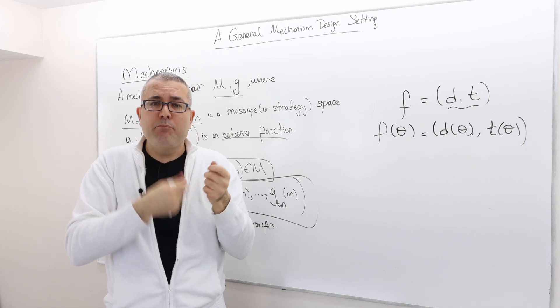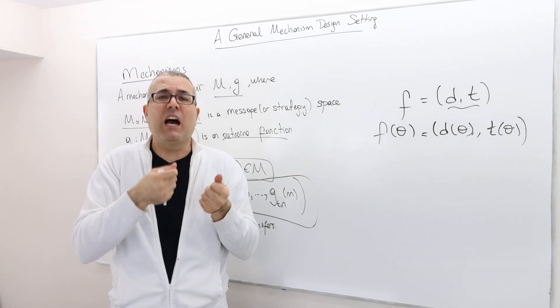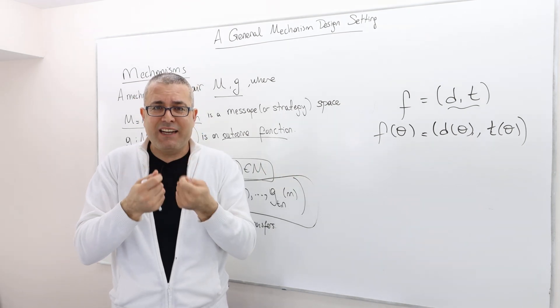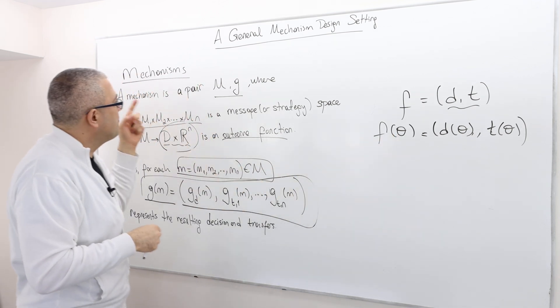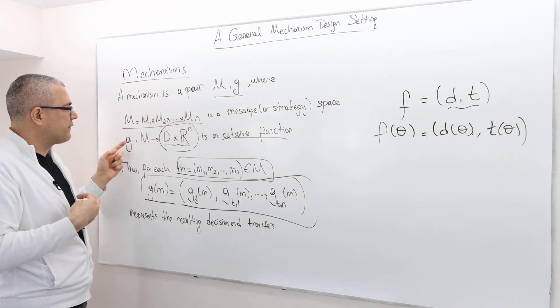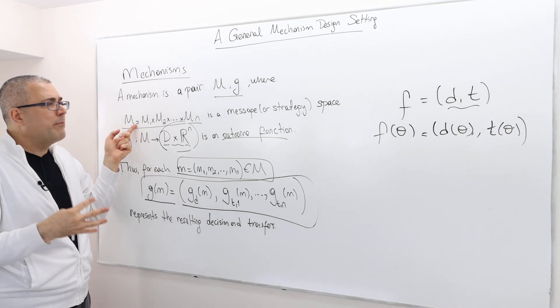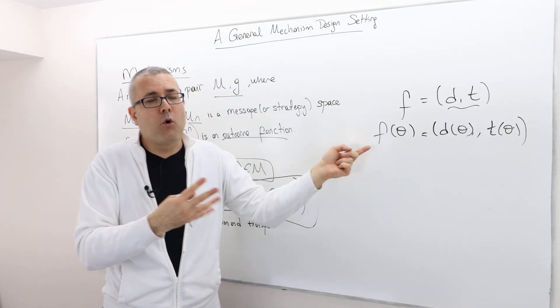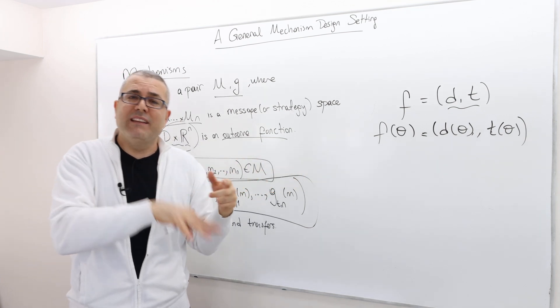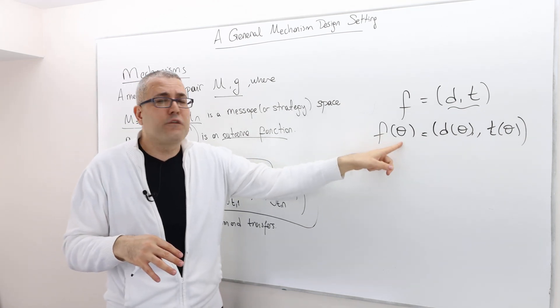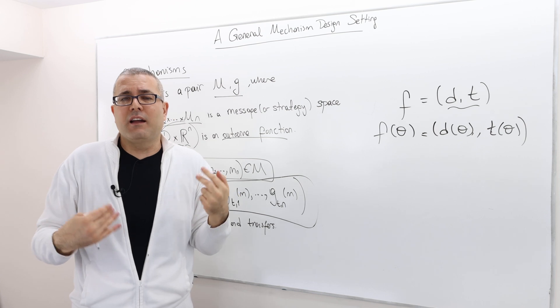So social choice function takes its inputs are the types, the declared types of the individuals. The mechanisms inputs, however, is the messages, where the messages can be the same or different from the types.